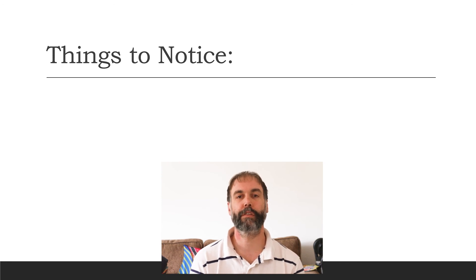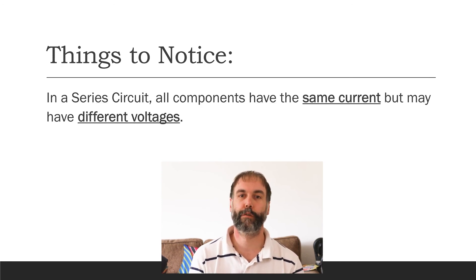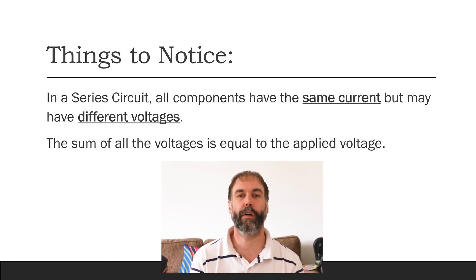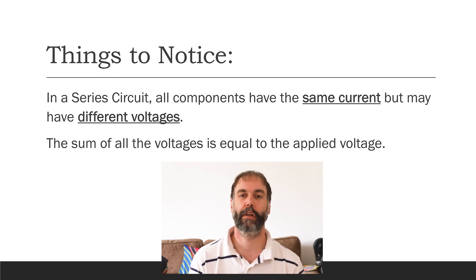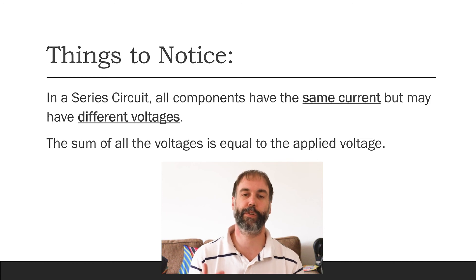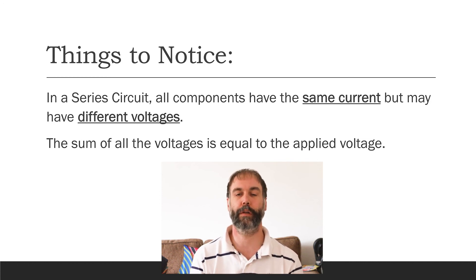A few things to notice about Ohm's Law in a series circuit: all components have the same current flowing through them, but they may have different voltages. Also, the sum of all voltages adds up to the original applied voltage. Here, our applied voltage was 18 volts, the first resistor had 6 volts, and the second had 12 volts — 6 plus 12 equals 18.